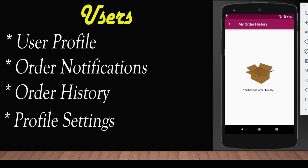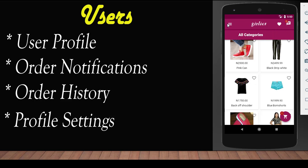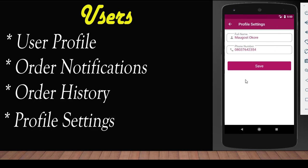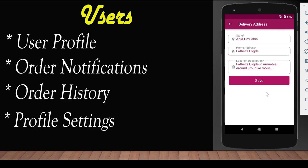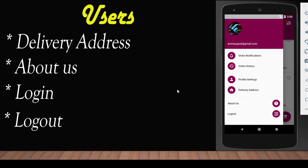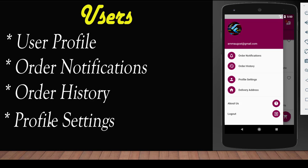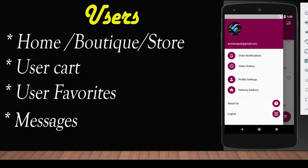This is where you also have the order history. The profile settings is where the user updates their name, username, full name, or mobile number. Delivery address is where the user updates their delivery location. These are the things we have in the user section: delivery address, about us, login, logout, user profile, order notifications, order history, the home screen, the user cart, the favorites, and the messaging.